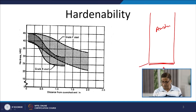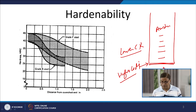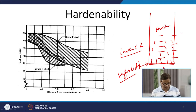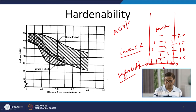The quenched end experiences the highest cooling rate, while locations further away experience continuously decreasing cooling rates. The transformation occurring near the quenched end will be different from zones experiencing lower cooling rates. As per hardenability, different phases will be present at different distances from the quenched end — at 0, 0.5 inch, 1 inch, 1.5 inch, and 2 inch distances — for the typical A517 and A514 grades B and F.